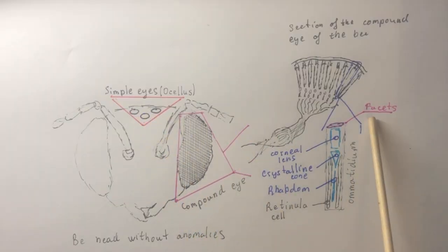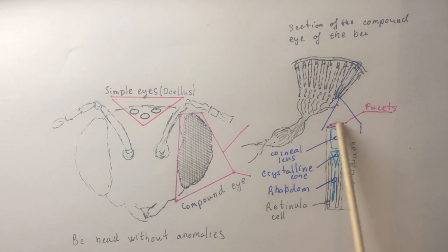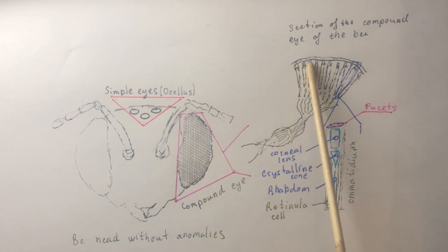The cornea is the outer transparent part of the faceted eye. It protects the eye from damage and helps to focus light on light-sensitive cells.